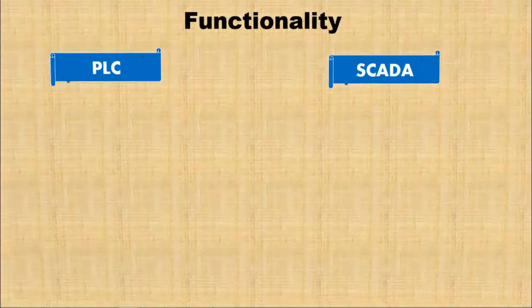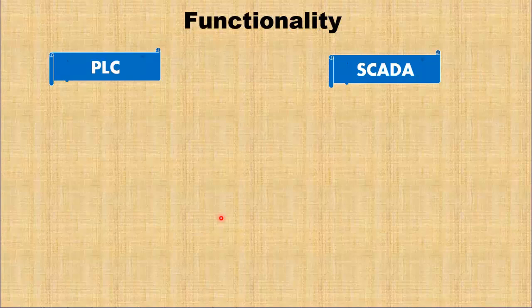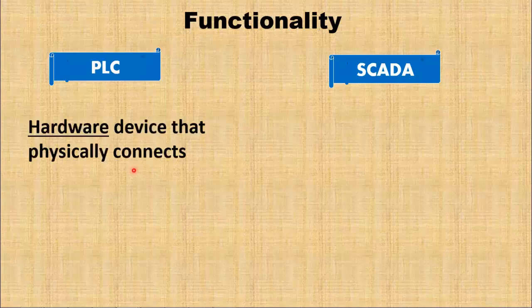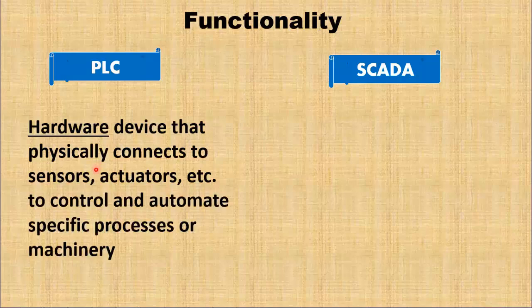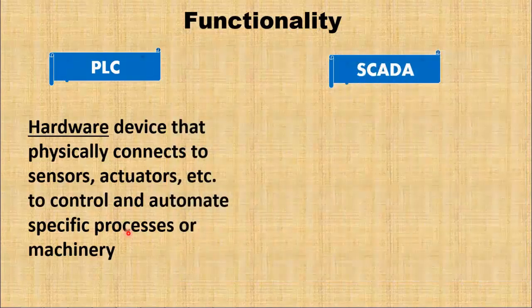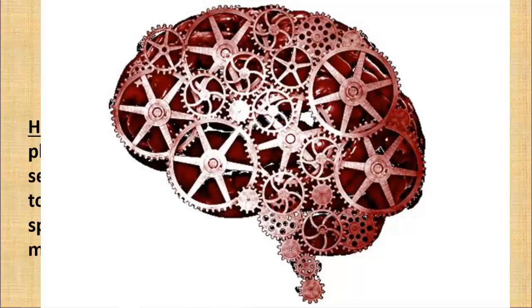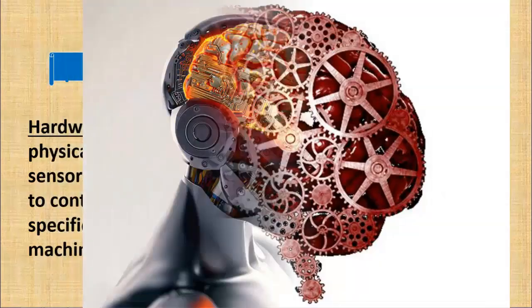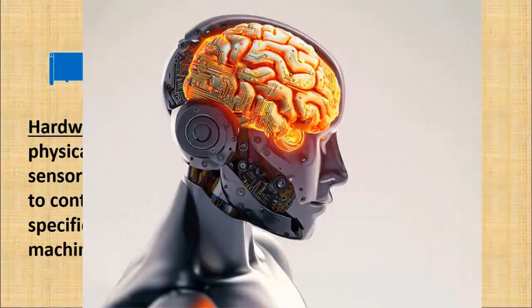Let's start with the first difference, which is based on functionality. PLCs are hardware devices that physically connect to sensors, actuators, and other field devices to control and automate specific processes or machinery. They are programmable and execute control functions based on the logic programmed into them. PLC is just like a brain in humans, or in robots, or as a main controller in machines.